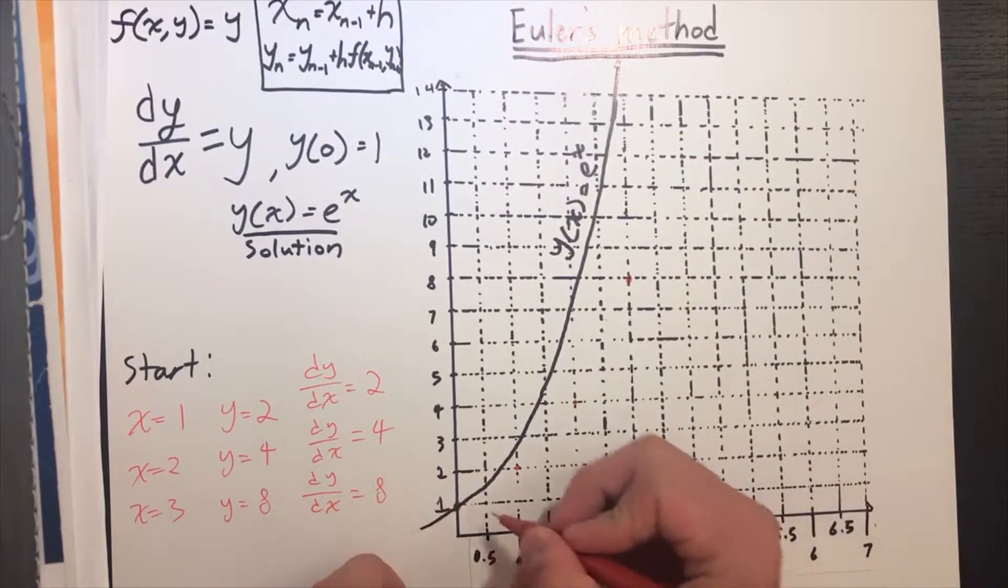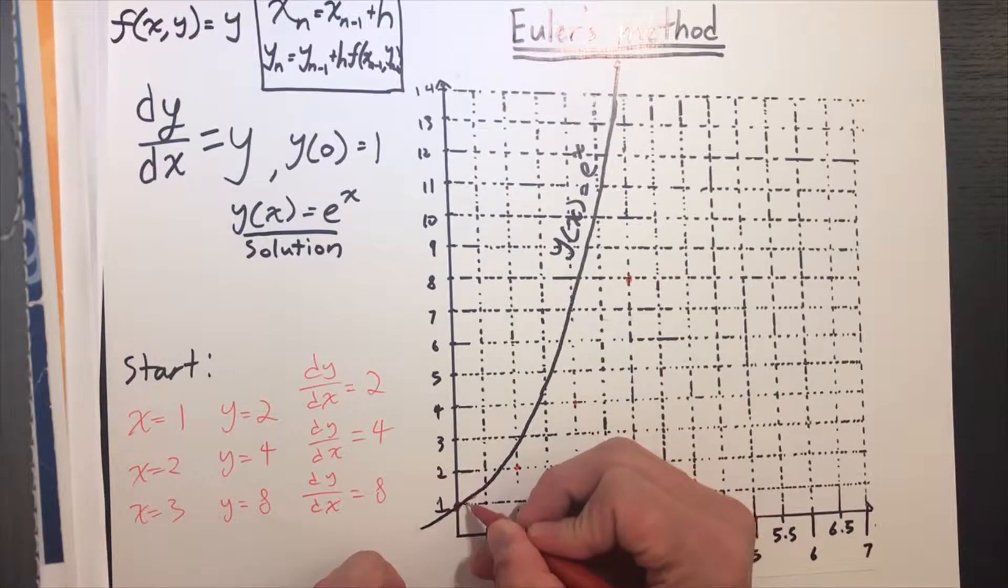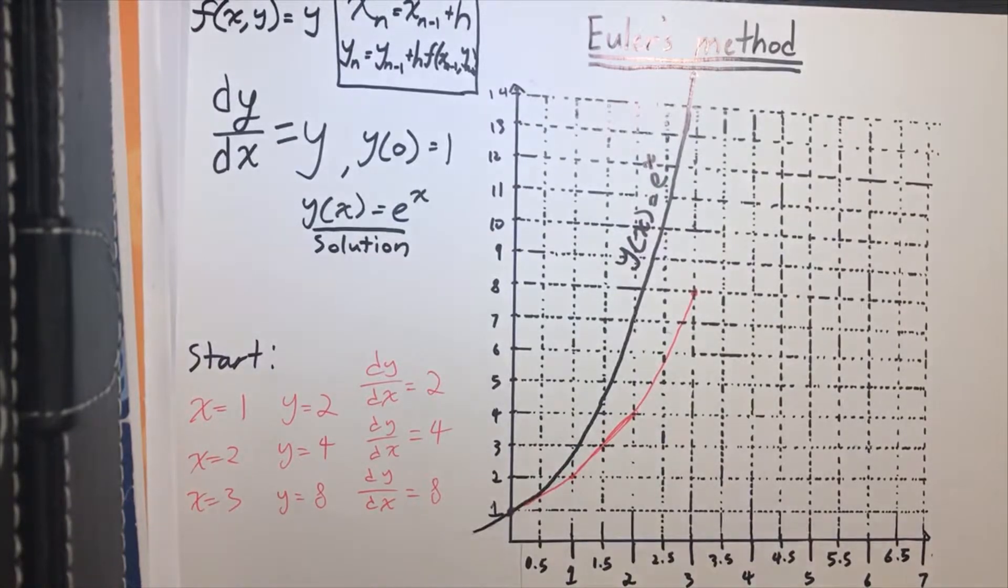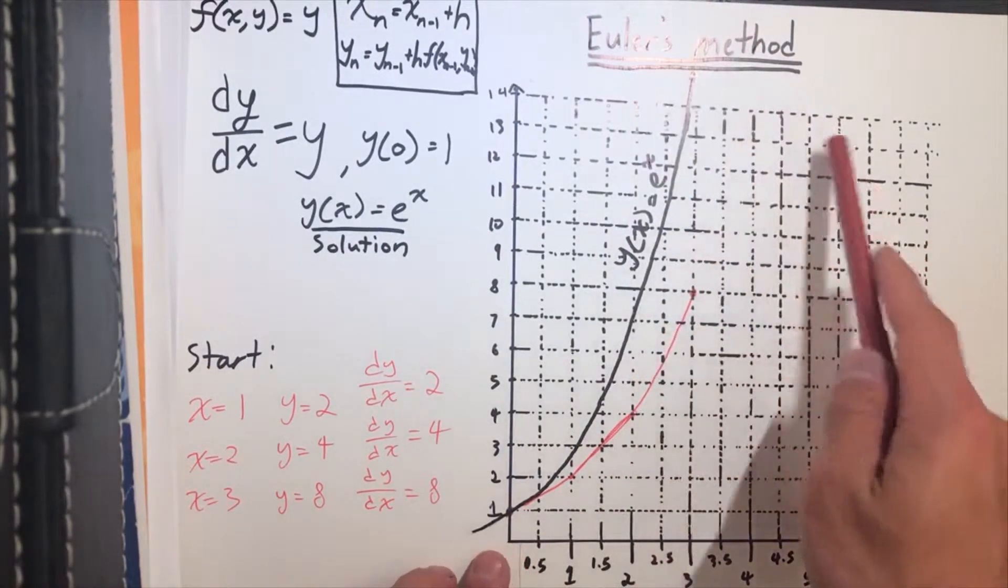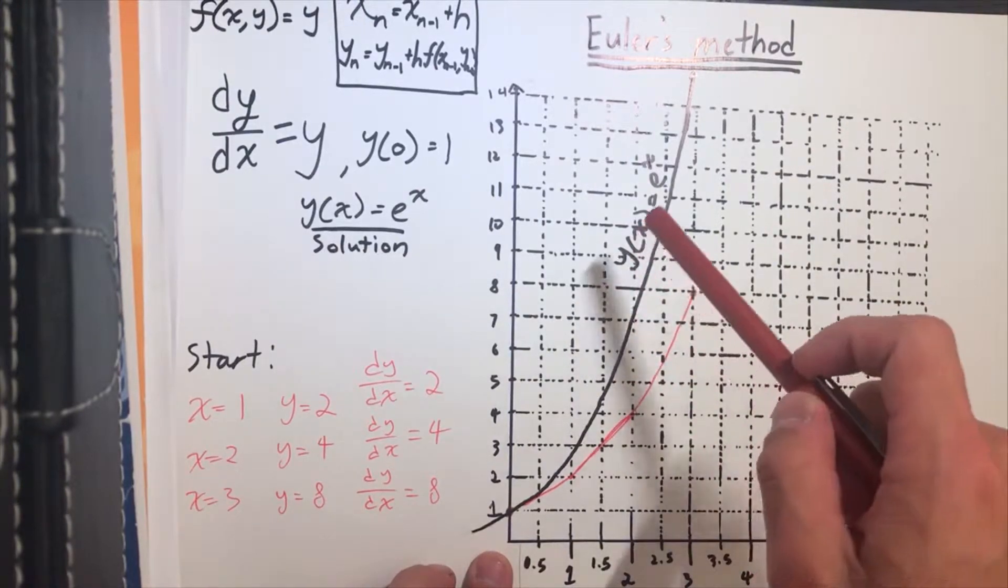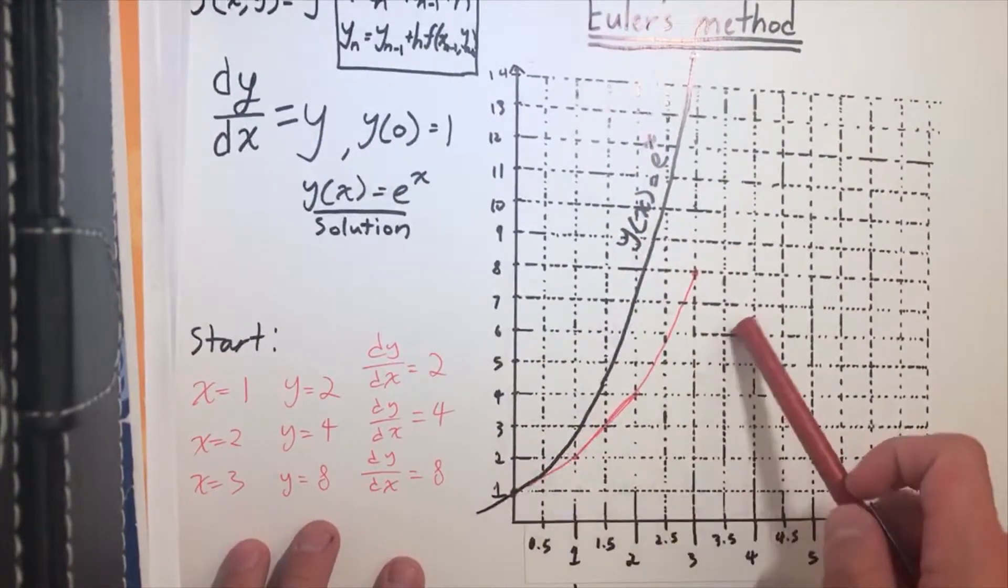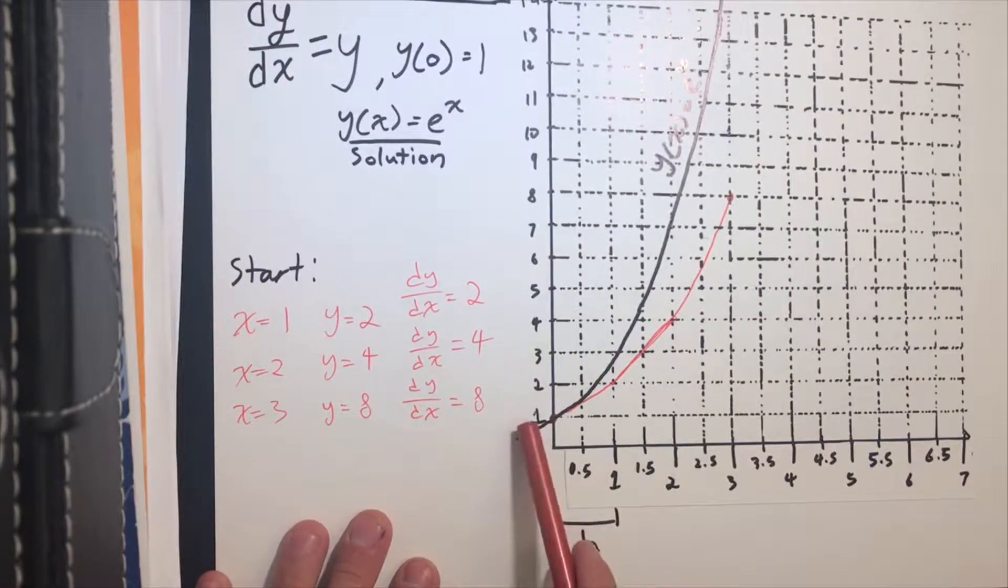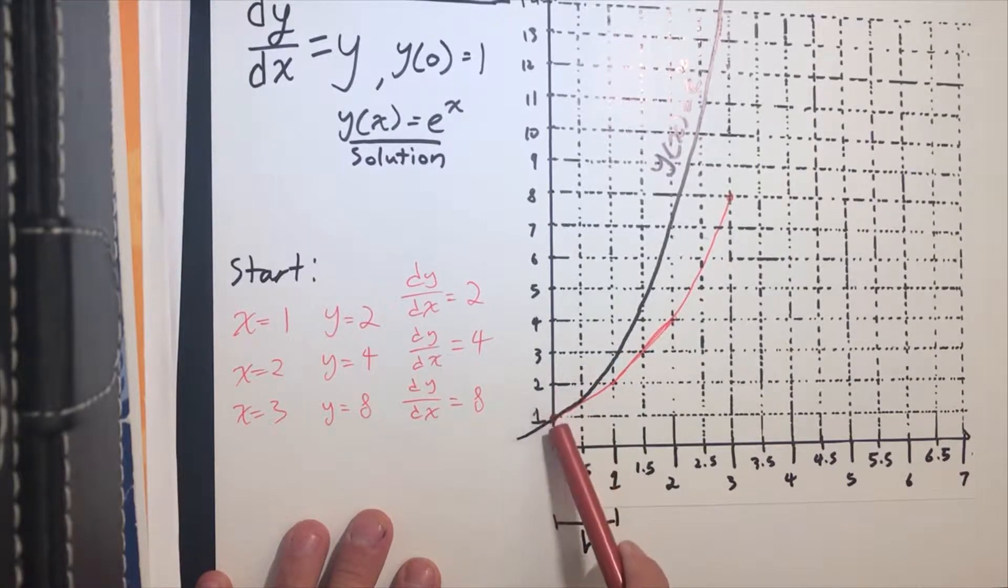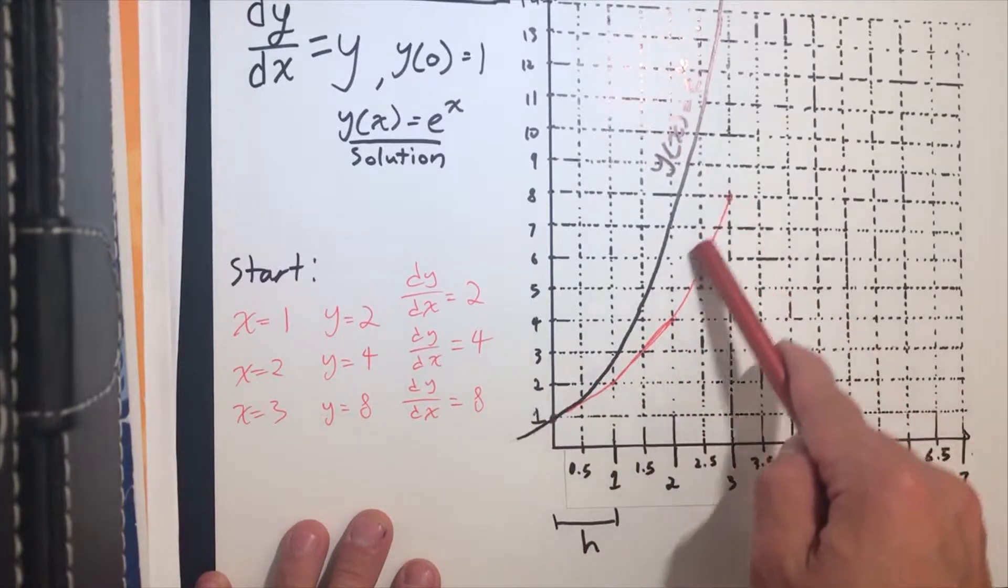Now we can connect these points. As you can see, the graph we created using Euler's method is not equal to the actual answer, but it gets closer the smaller the h value you choose. If you chose h = 0.1, you'd get more accurate points that are closer to the actual graph.